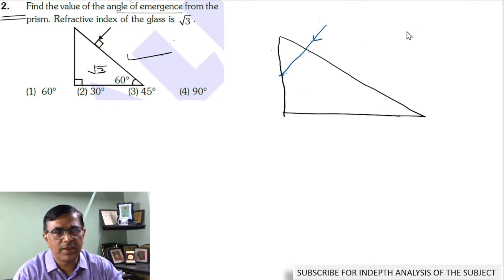To check it, let us apply this formula: sin C equals 1 by μ, where μ is the refractive index of the denser region with respect to the rarer region and is given to be √3. Solving for C, the value turns out to be about 35 degrees. This is the critical angle.